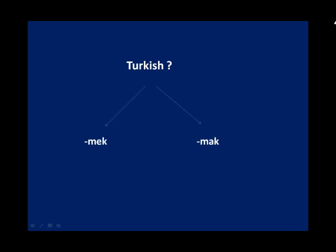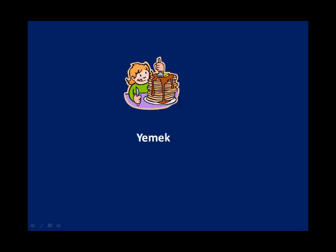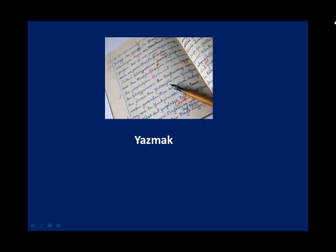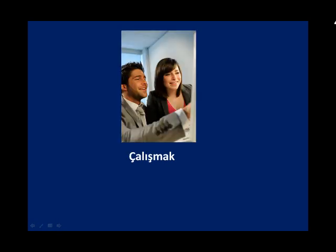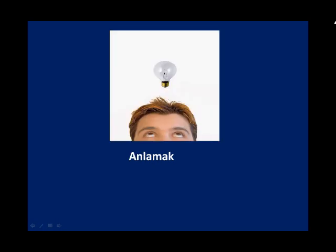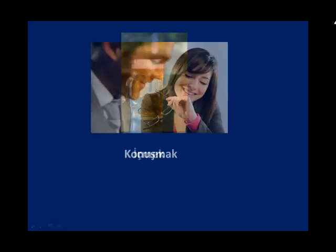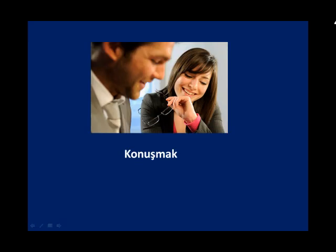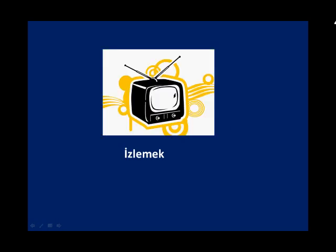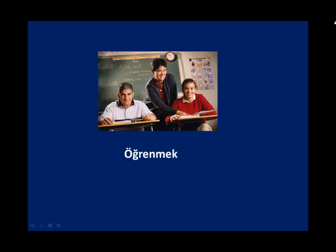How about Turkish? Well, Turkish also has its own way of showing the basic form of a verb. It's '-mek' or '-mak', and it changes according to — guess what? The vowel harmony. Let's learn some verbs: yemek (to eat), yazmak (to write), çalışmak (to work or to study — we have one verb for both), anlamak (to understand), demek (to tell), içmek (to drink), konuşmak (to speak), okumak (to read), izlemek (to watch), and öğrenmek (to learn).